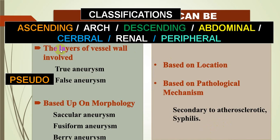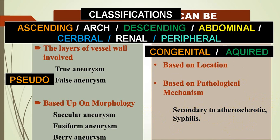Depending upon anatomical localization, you can label the aneurysm accordingly. On etiological grounds, the most common causes are congenital and acquired. Among acquired, atherosclerosis and syphilis come topmost on the list.